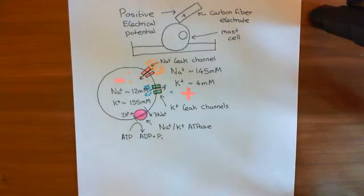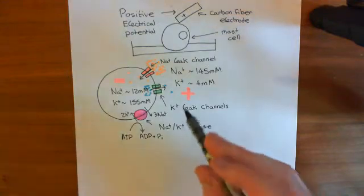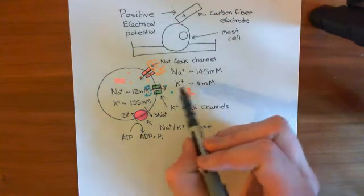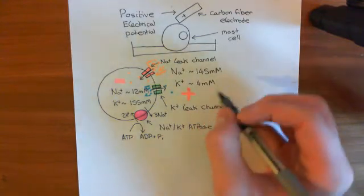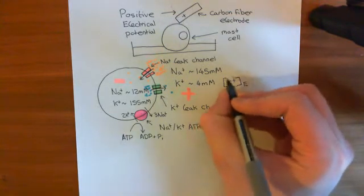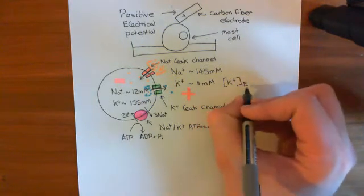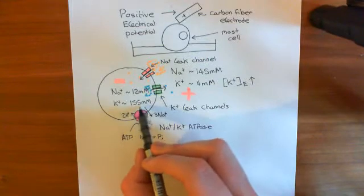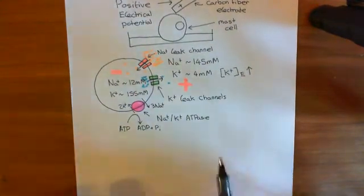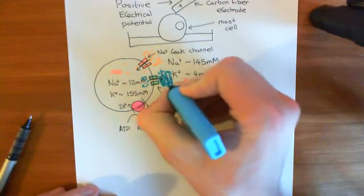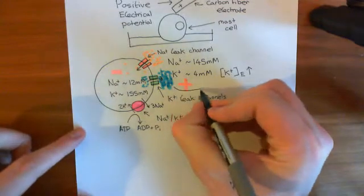So why, when you douse a cell in potassium chloride, does this cause depolarization of the cell membrane? Let's think about what we're doing. If we put the cell in a very high concentration of potassium chloride, then we're going to raise the extracellular concentration of potassium hugely. The extracellular concentration of potassium — written with square brackets meaning concentration of, with the subscript 'e' for extracellular — is going to go through the roof. It might reach huge values, way above the 155 millimolar inside the cell, potentially.